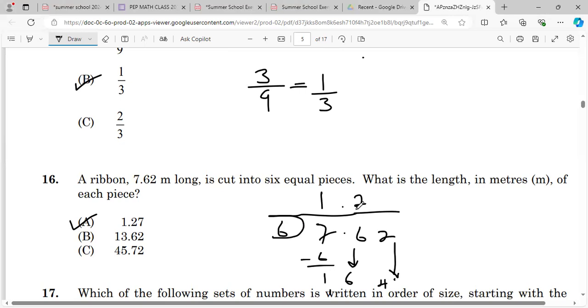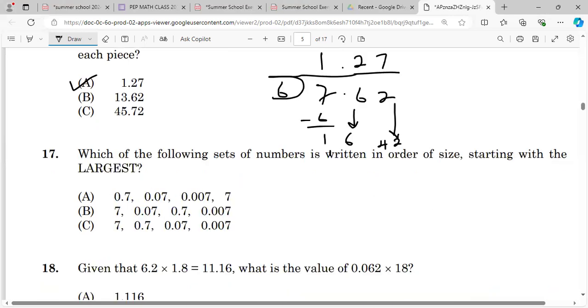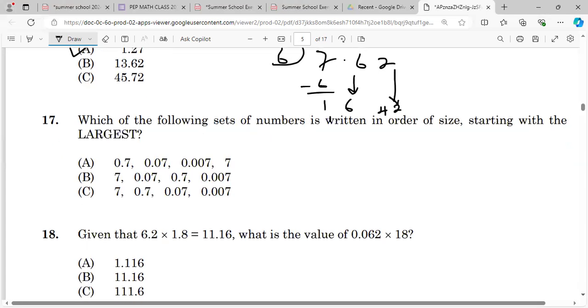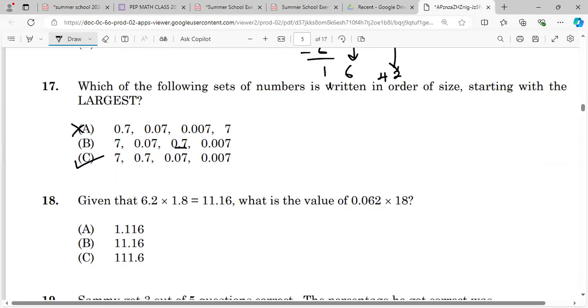Let's move on to 17. Which of the following sets of numbers is written in order of size starting with the largest? So it's the largest. In this case, this couldn't be the largest. So the largest would be 7. So this one, 0.7 is larger than 0.07.